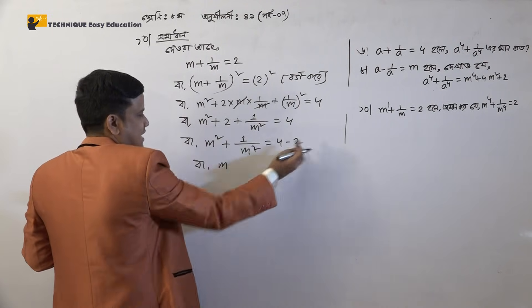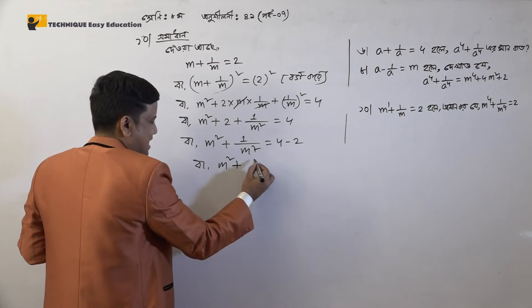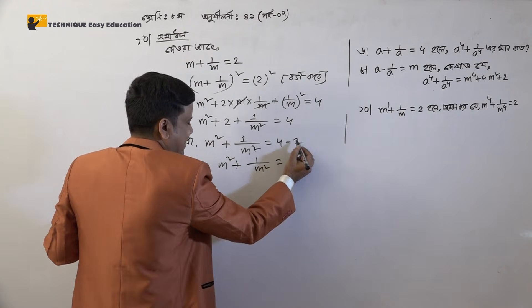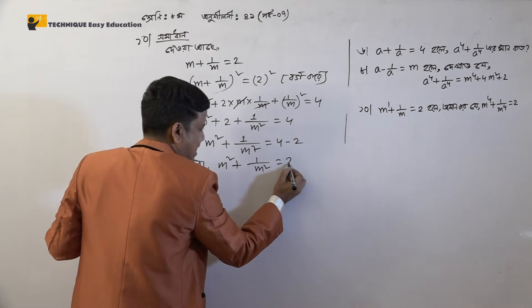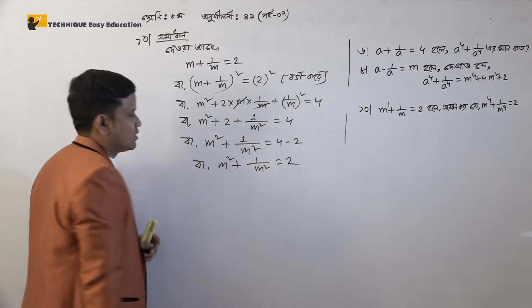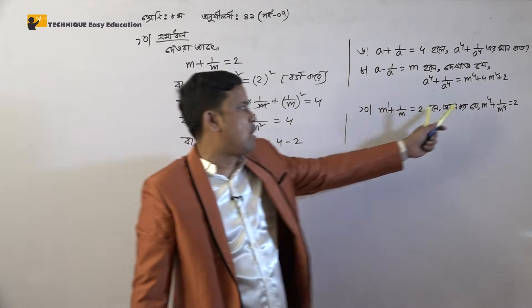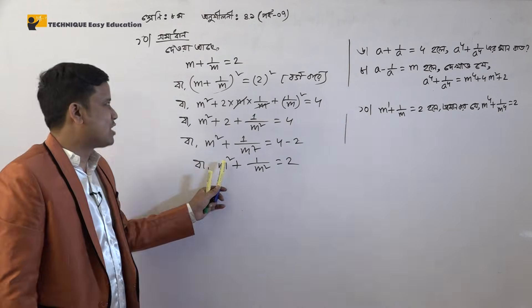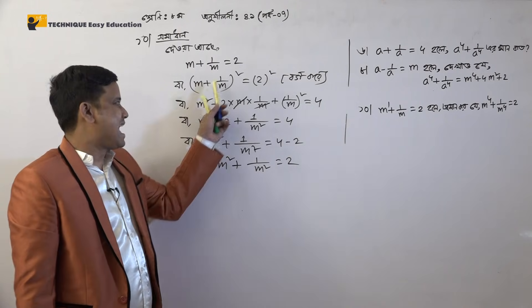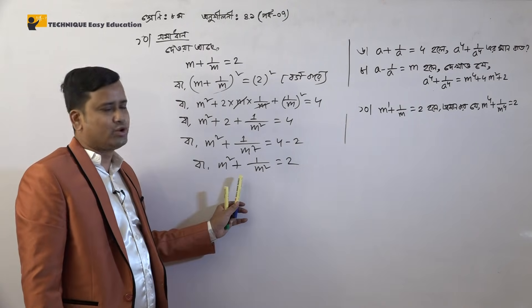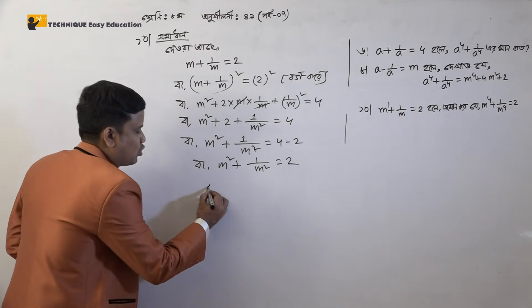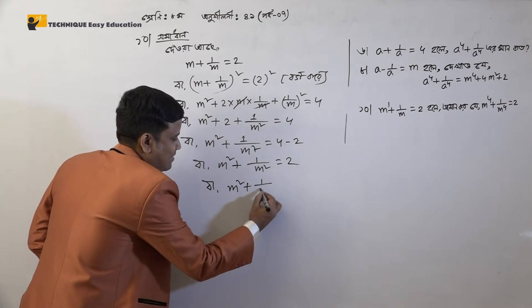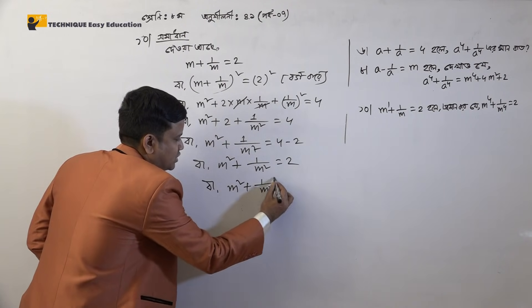M squared plus 1 by M squared. M squared equals M squared. This one is minus 2. M squared plus 1 by M squared minus 2.